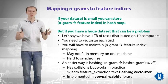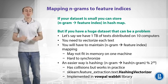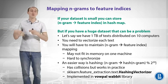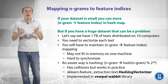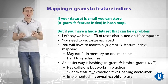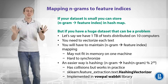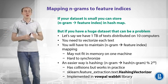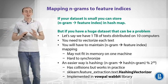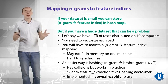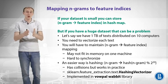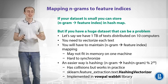Let's say we have one terabyte of text distributed on 10 computers and you need to vectorize each text — replace it with a vector of TF-IDF values. You will have to maintain that correspondence from n-gram to feature index, and that can become a problem with 10 computers doing the same thing. The hash map may not fit in memory on one machine, meaning you need a kind of database where all machines store and access these correspondences. That doesn't scale well.